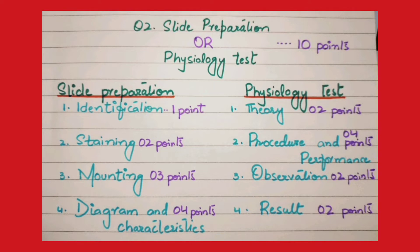When you draw the diagram and write down its characteristics — at least three to five characteristics — it comprises 4 points. I recommend my students to write down at least five characteristics in the slide preparation question.